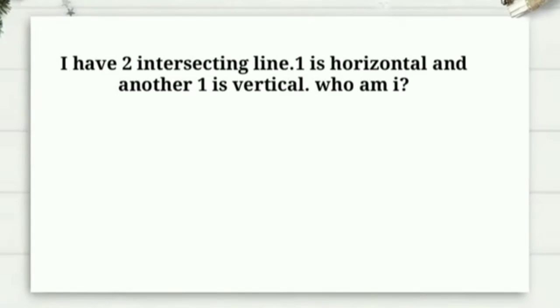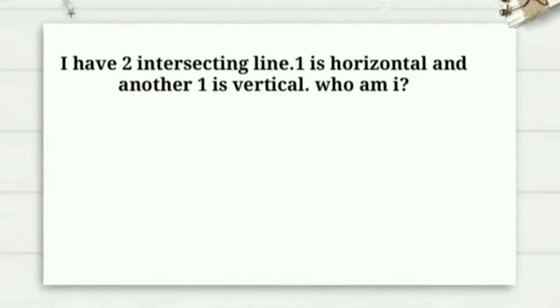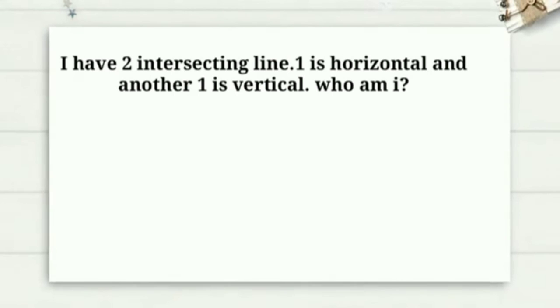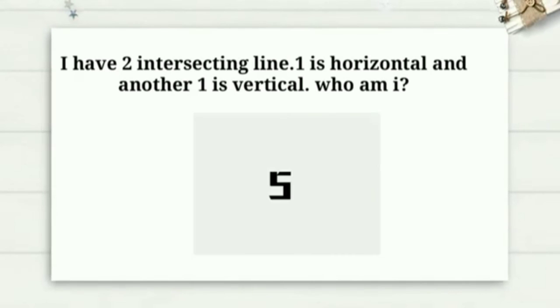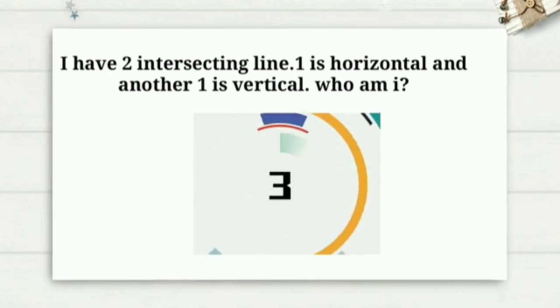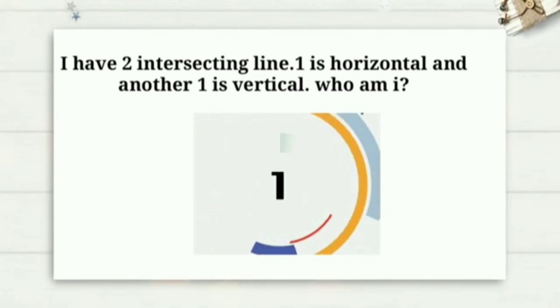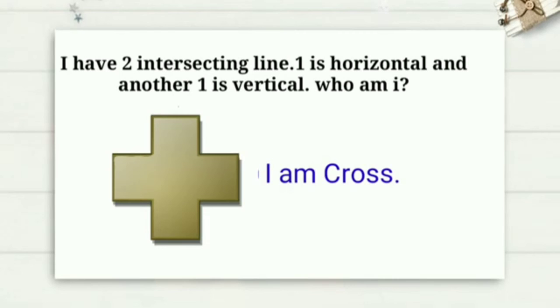I have two intersecting lines. One is horizontal and another one is vertical. Who am I? I am a cross.